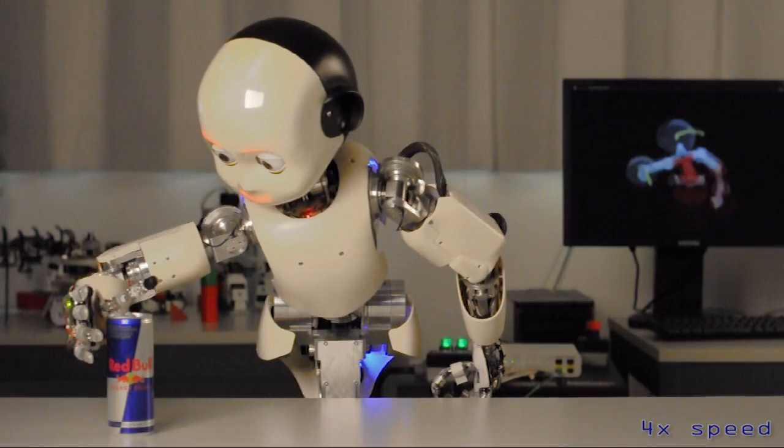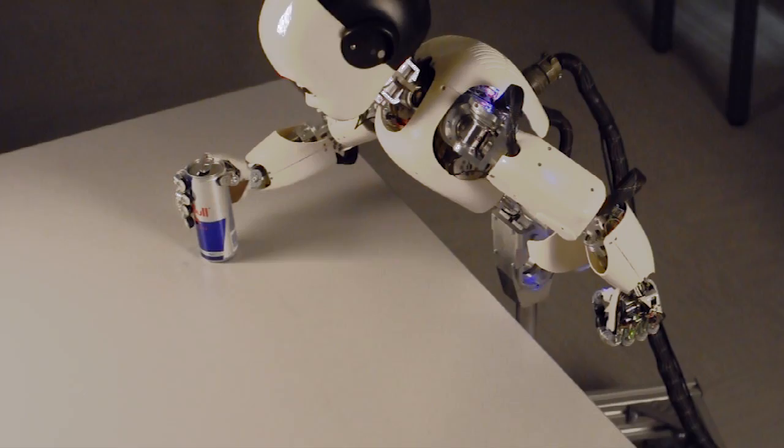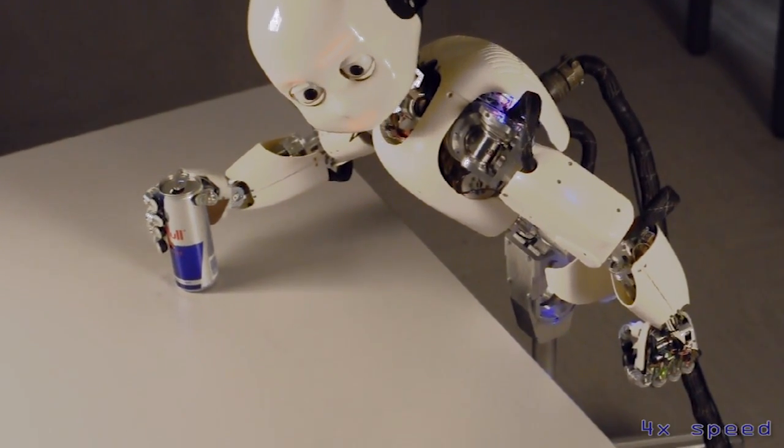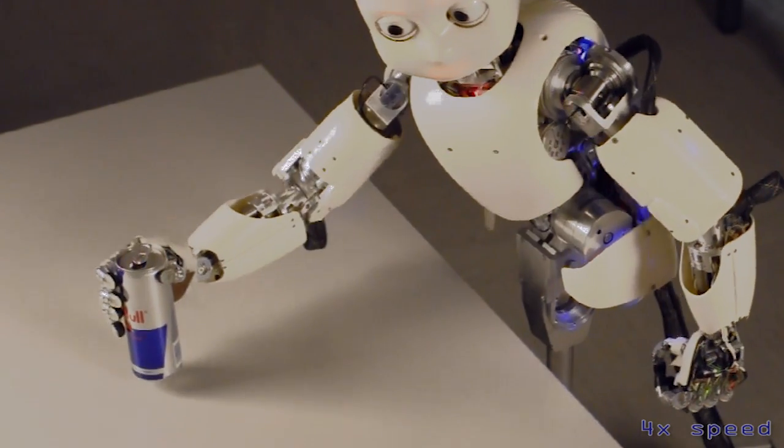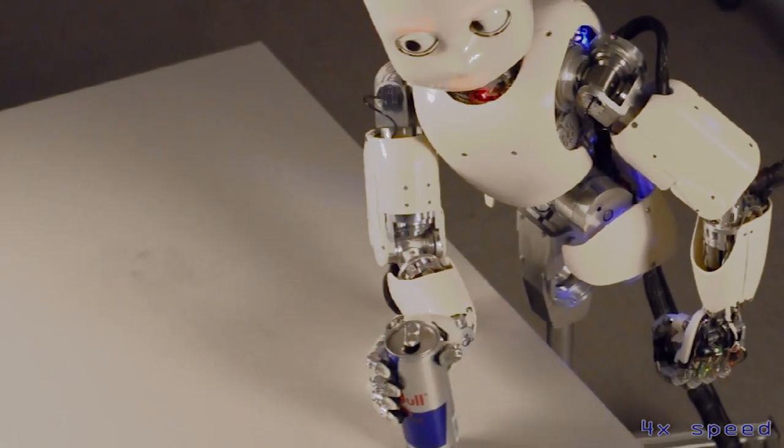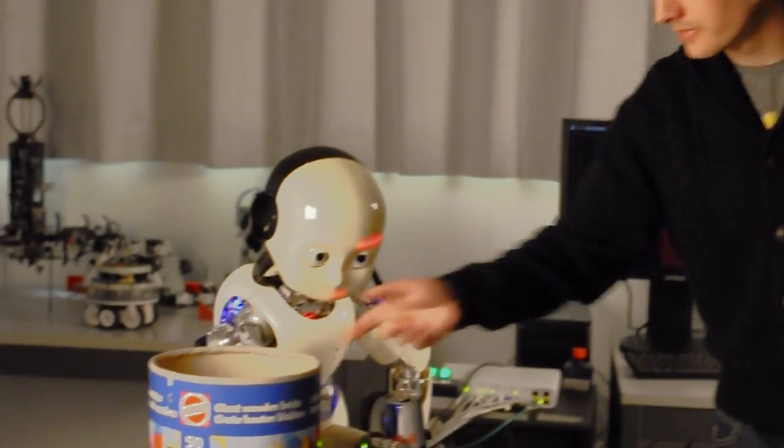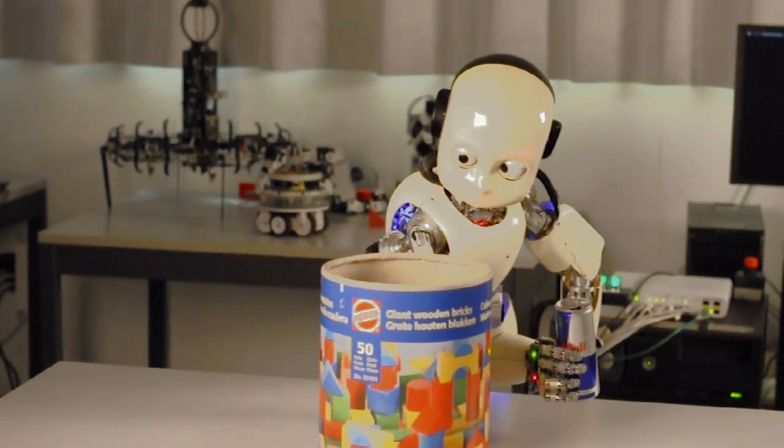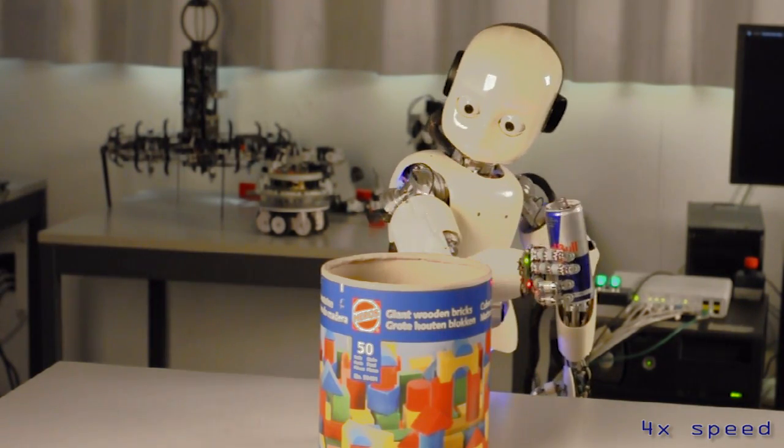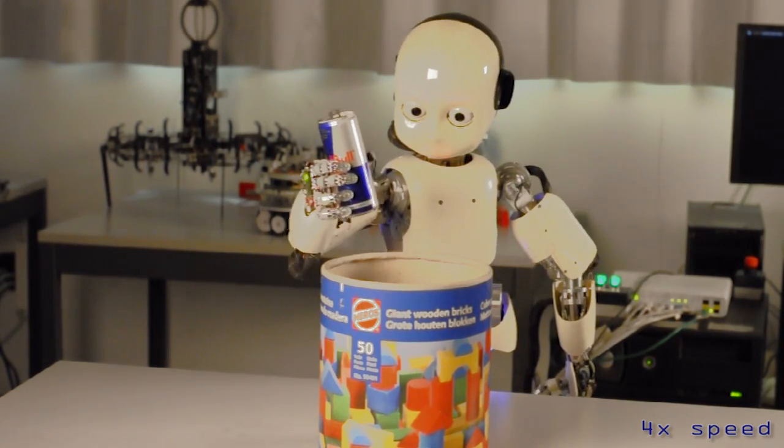For changing environments we use roadmap planning to plan around obstacles. Here the iCub moves the can freely to the other side of the table. Now we put the box in the way. The planning algorithm finds a way around the obstacle, and the iCub puts the can back in its original position.